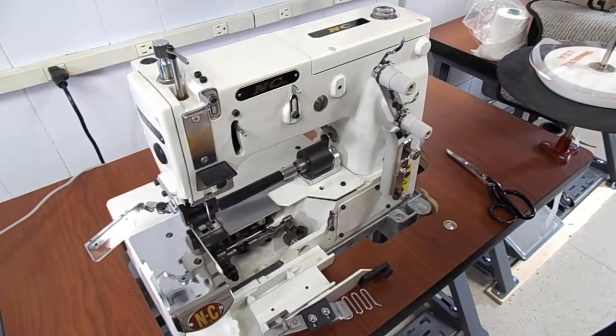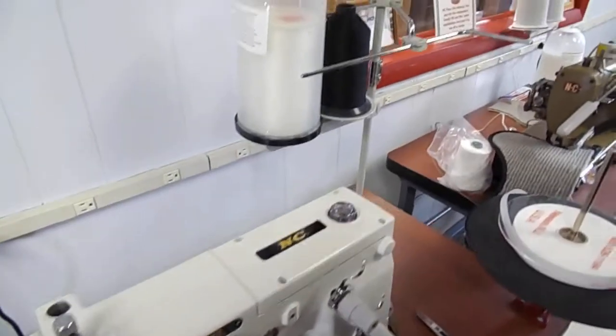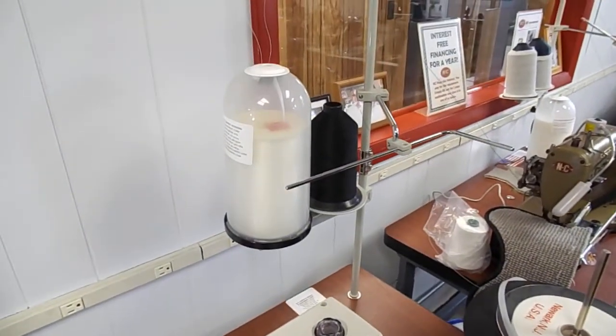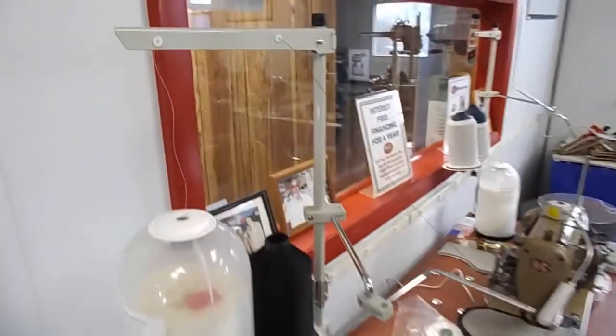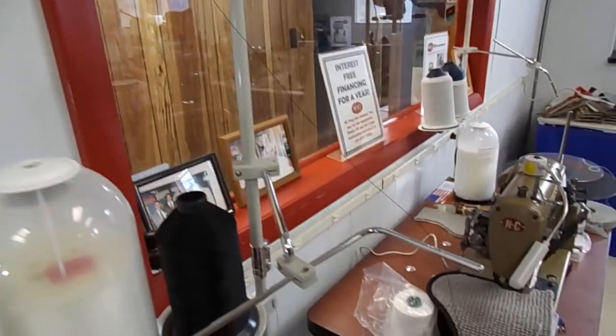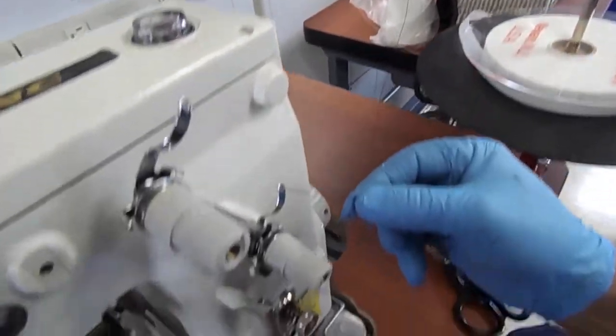Here's a video on the threading of our new model SB2 and or SBA2. For the purpose of the video, we're going to use a black thread and show you first the looper threading. You're going to come up through the thread stand up top, bring it down to the first arm on the outside, and then we're going to come down to the machine.